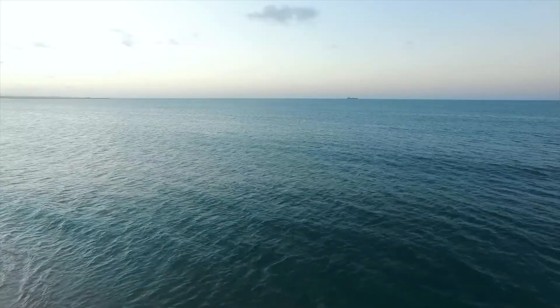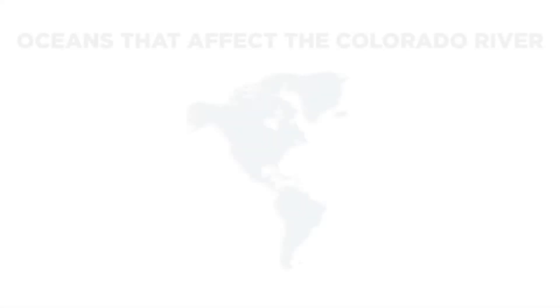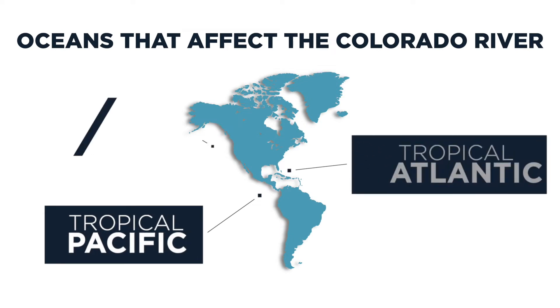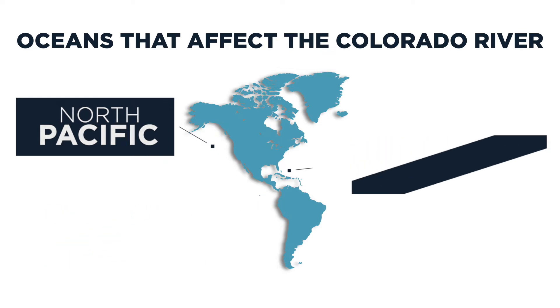The ocean has lower frequency variability — pretty slow variability. This kind of slow modulation affects atmospheric variability, and it's kind of a shift of the probability. We found that the tropical Pacific, Atlantic, and North Pacific — almost a global ocean pattern — will affect the Colorado River.